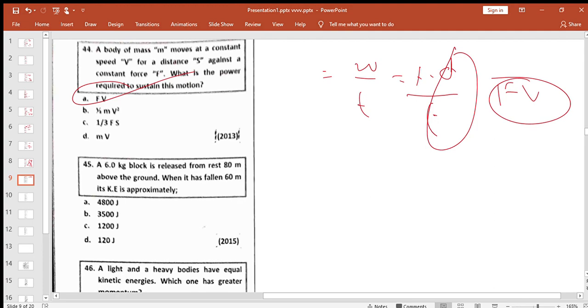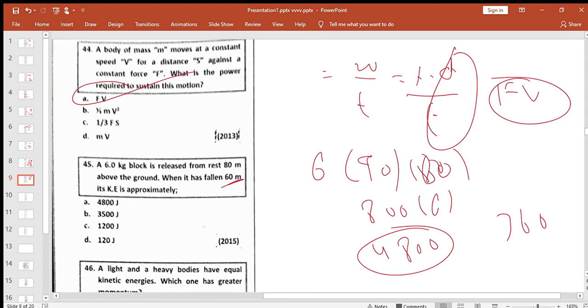A 6 kilogram block is released from rest 80 meters above the ground. What is its kinetic energy at 60 meters? The block has mgh. Mass is 6, g is 10, height was initially 80. So 6 times 10 times 80 equals 4800 joules at 80 meters. At 60 meters, if we put 60: 6 times 10 times 60 equals 3600 joules.